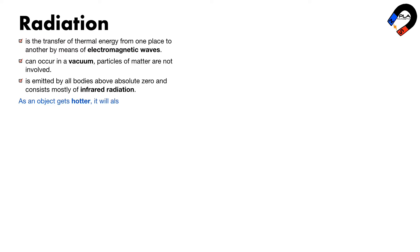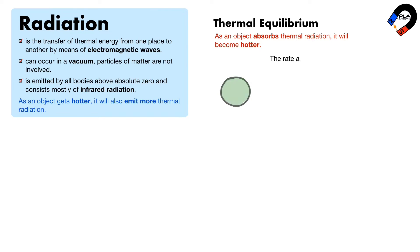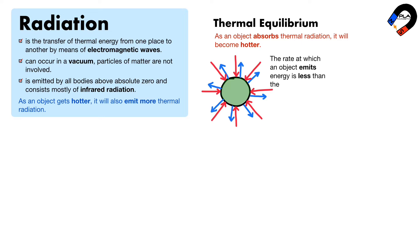As an object gets hotter, it will also emit more thermal radiation. As an object absorbs thermal radiation, it will become hotter. If the rate at which an object emits energy is less than the rate at which it absorbs energy, then the object will heat up.